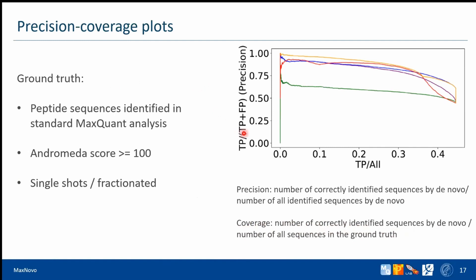Each point in the curve is plotted for a certain threshold of the score. If we take a high threshold, we get high precision but low coverage. If we lower the score threshold, we increase coverage and lower precision.